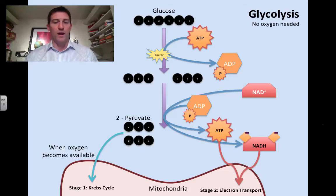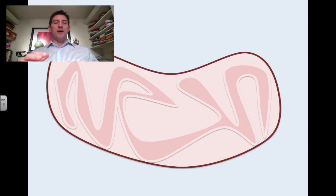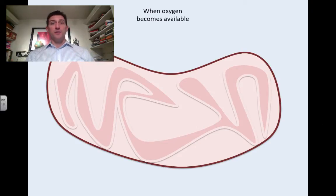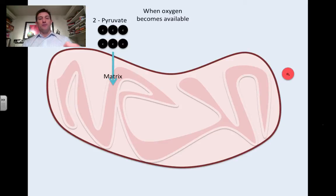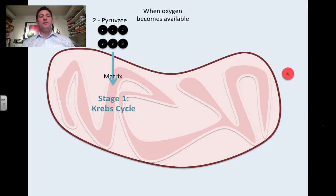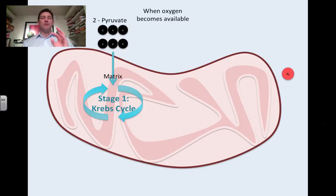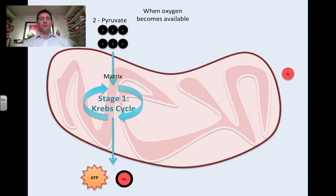I'm going to move the screen down so we can look right into the mitochondria. Remember: glycolysis was the first step, and now we're looking at what happens when oxygen becomes available. These two pyruvate end up going inside the mitochondria, into the matrix. You can see I've tried to draw the inner membrane inside the mitochondria — there's a space inside called the matrix. A whole series of chemical reactions happen in there called the Krebs cycle. There'll be another video going into detail, but for now those carbons get broken apart and rearranged.